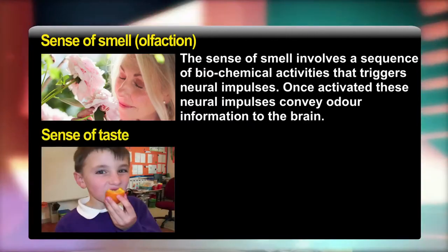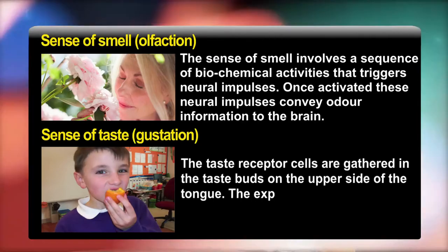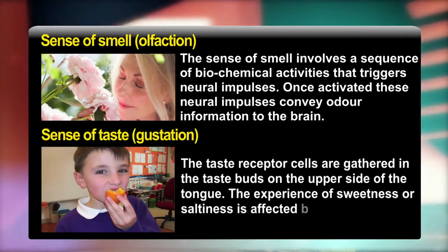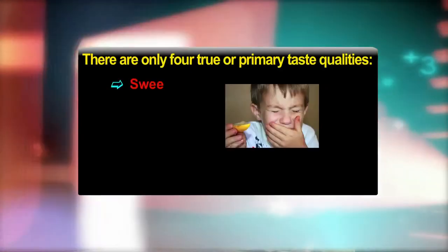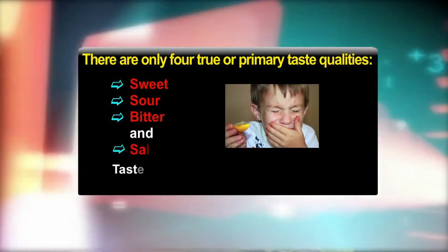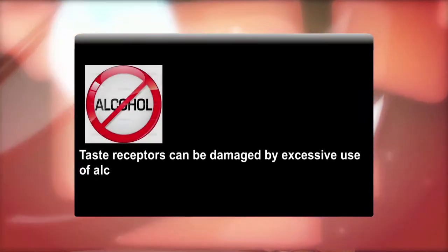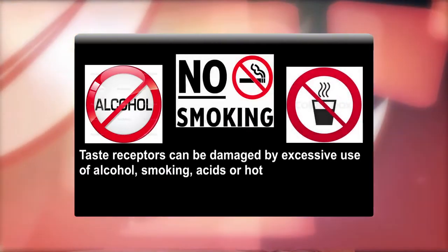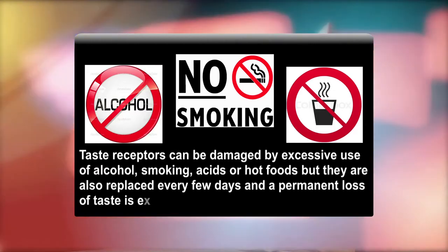The sense of taste involves taste receptor cells gathered in the taste buds on the upper side of the tongue. There are only four true or primary taste qualities: sweet, sour, bitter, and saline. Taste sensitivity develops in infancy but decreases in old age. Taste receptors can be damaged by excessive use of alcohol, smoking, acids, or hot foods, but they are replaced every few days, preventing permanent loss of taste.